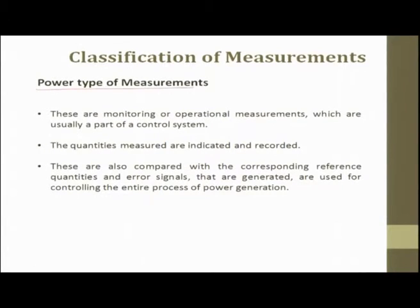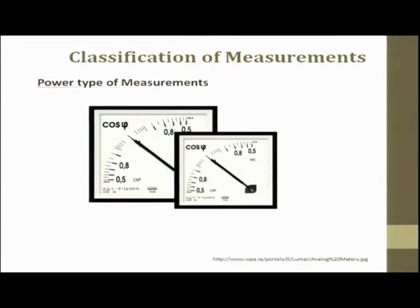The next classification is the power type of measurement. Here we talk about the power involved. These are monitoring or operational measurements which are usually part of a control system. The quantities measured are indicated and sometimes recorded. They are also compared with corresponding reference quantities, and the error signals generated are used for controlling the entire process of power generation.